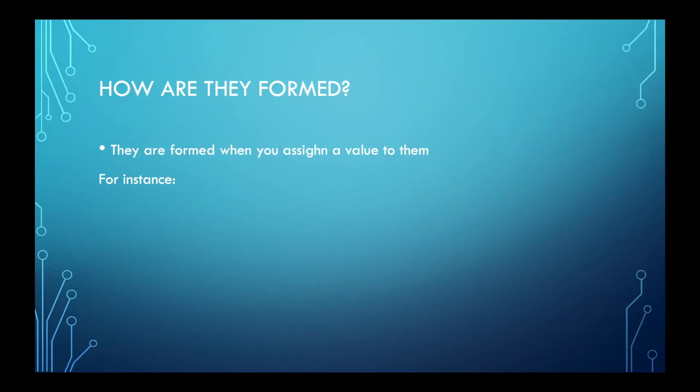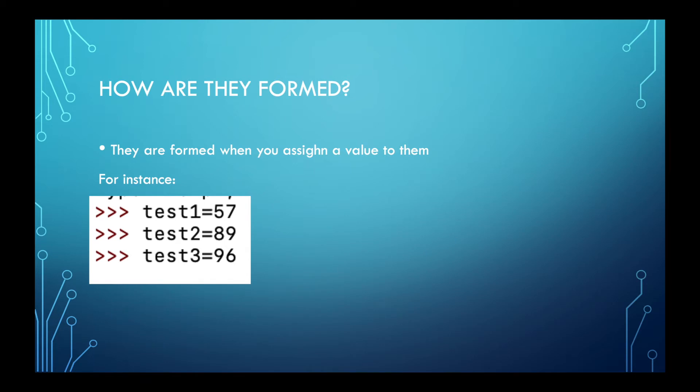So how are variables formed? Well, variables are formed when you assign a value to them. For instance, if you have a test and you had a math test and you wanted to record all of your tests on Python to make like a program on your phone to check all of your exams and see the difference or something like that, you will have to put a value for each test. So if you got 57 on your first exam, then the value of the first variable, which is test one, is 57, while the value for test three is 96. And you can see how you have improved.